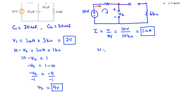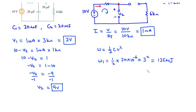Now let's find the energies stored in the two capacitors. For C1: W1 equals half times 30 times 10⁻⁶ times 3 squared, giving 135 microjoules. For C2: W2 equals half times 20 times 10⁻⁶ times 9 squared, giving 810 microjoules. So W1 is 135 microjoules and W2 is 810 microjoules.